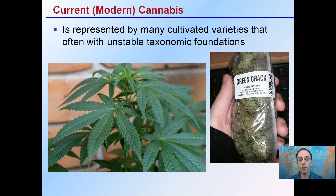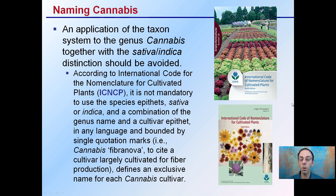You'll hear names like 'Green Crack' and other unusual names — these are on very unstable taxonomic foundations and the names are highly variable. An application of the taxon system to the genus cannabis, together with the sativa and indica distinction, should be avoided. The sativa and indica labels are not really a great correlation to the plant — they may indicate the morphology but don't go much beyond that.